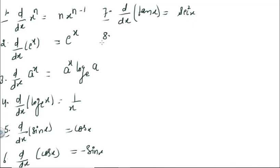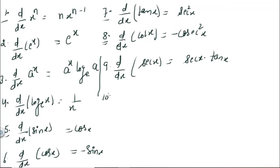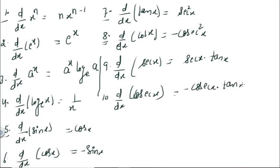Formula 8: d/dx of cot x = −cosec²x. Formula 9: d/dx of sec x = sec x · tan x. Formula 10: d/dx of cosec x = −cosec x · cot x.